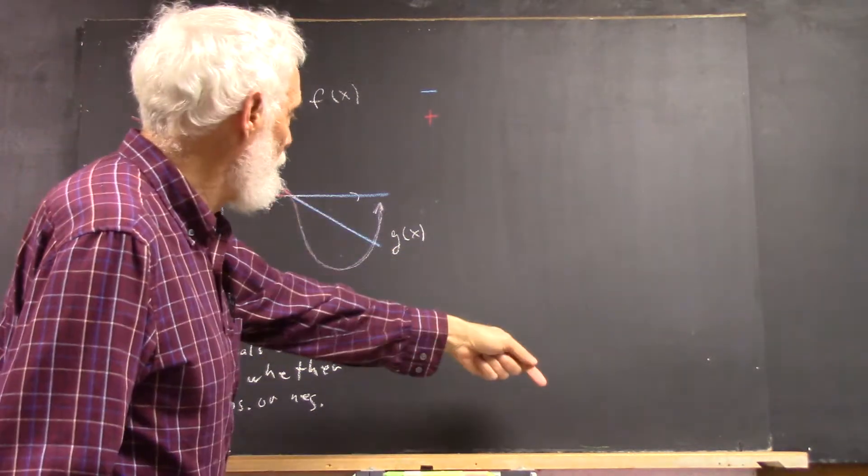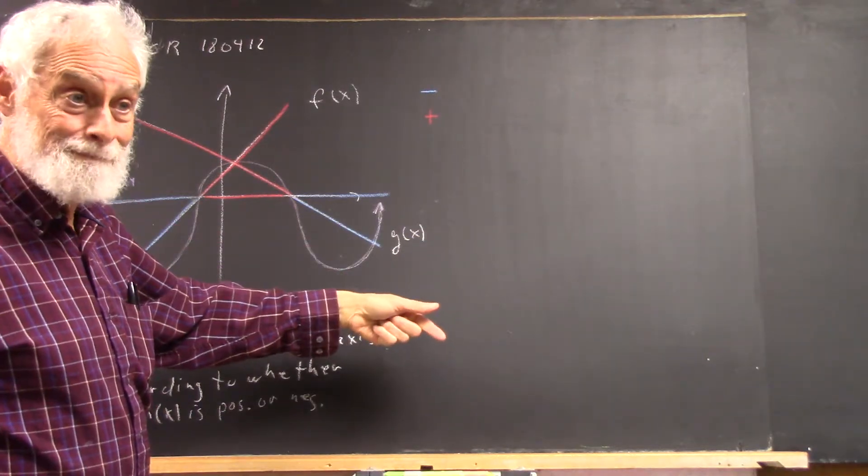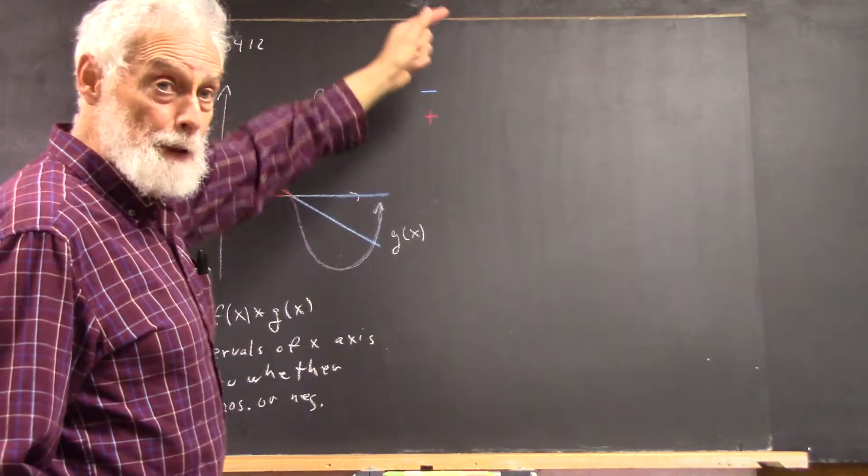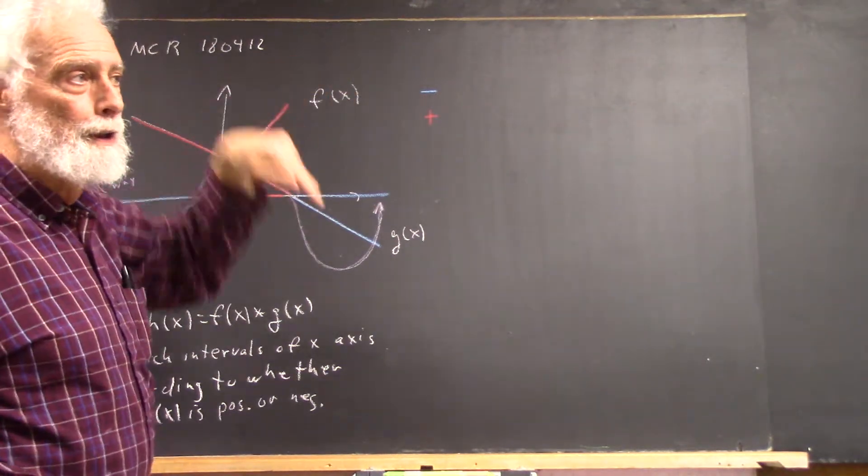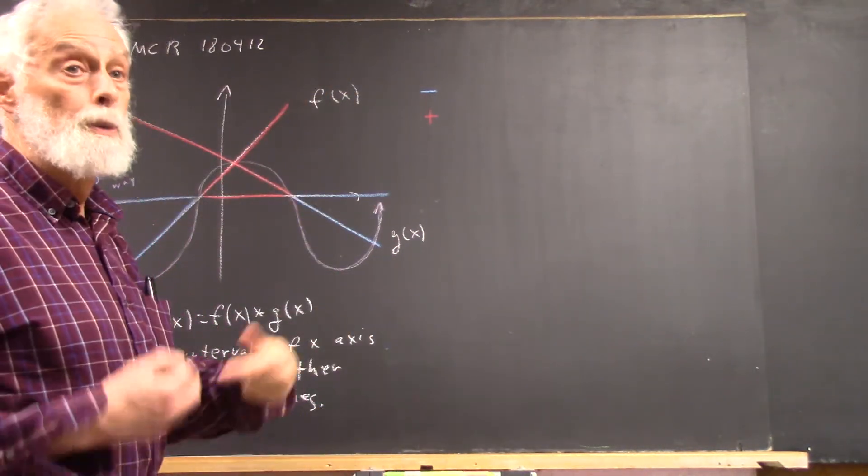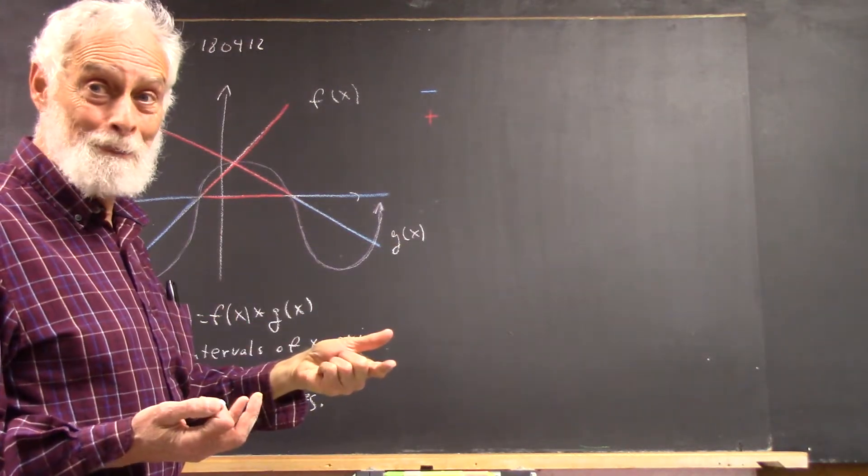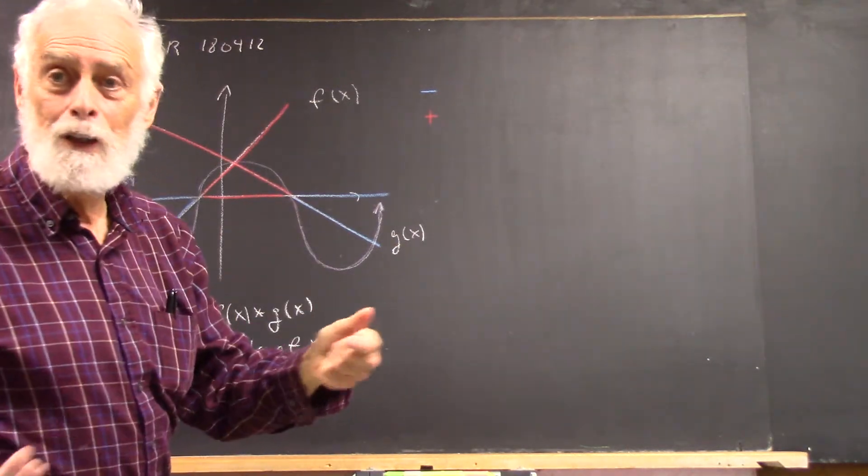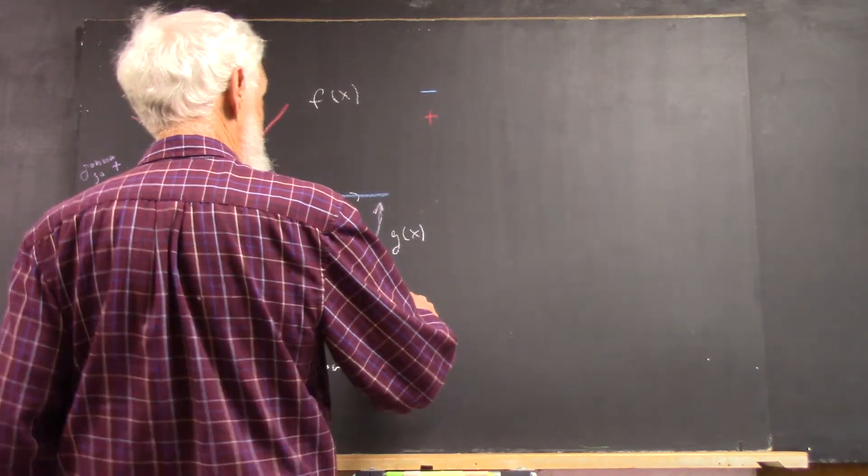But let's think about the end behavior now. Well, it's the same thing. This one's getting bigger, bigger negative, but it's getting bigger, right? And this one's getting bigger. So you've got something that's positive that's getting bigger and a negative that's getting bigger. When you multiply them, you're going to get a negative, and it's going to be getting bigger, faster, and faster. So on the end here, it's got to go like this.